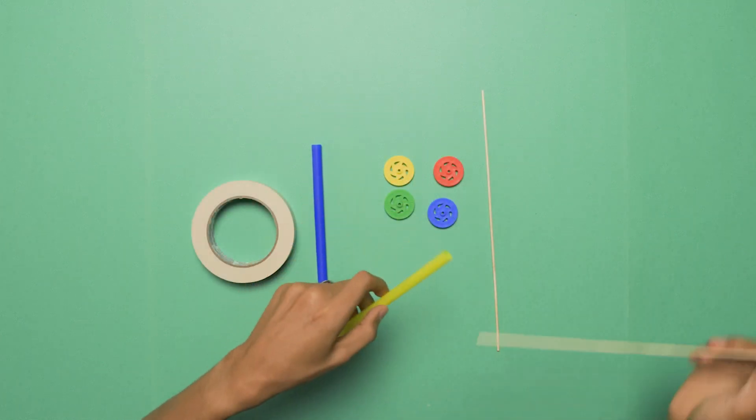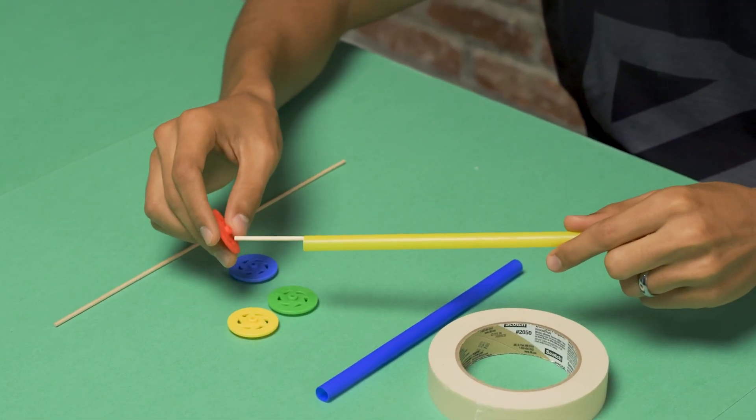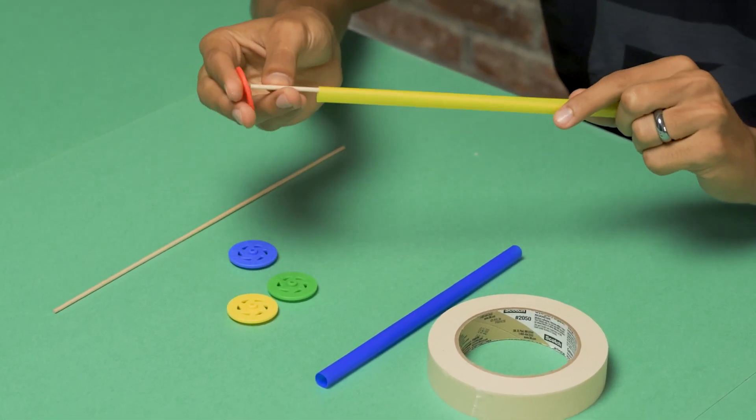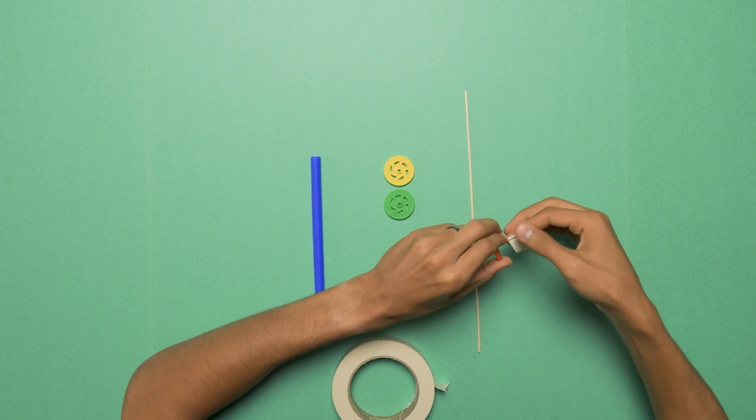Then you're going to take a skewer, put it through the straw, and then attach one wheel on each side. You're going to want to make sure that you use a little bit of tape on each of the edges to make sure the wheels don't slide off.